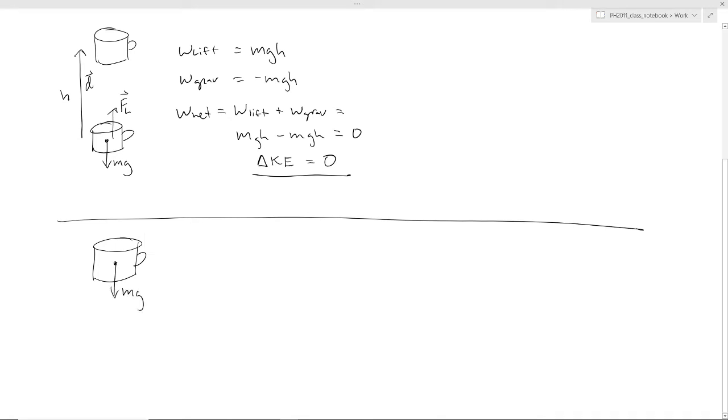So we still have the force of gravity that's pointed down and now there's going to be some displacement down through some height, and we're just going to drop it the same distance to the table or to the floor.